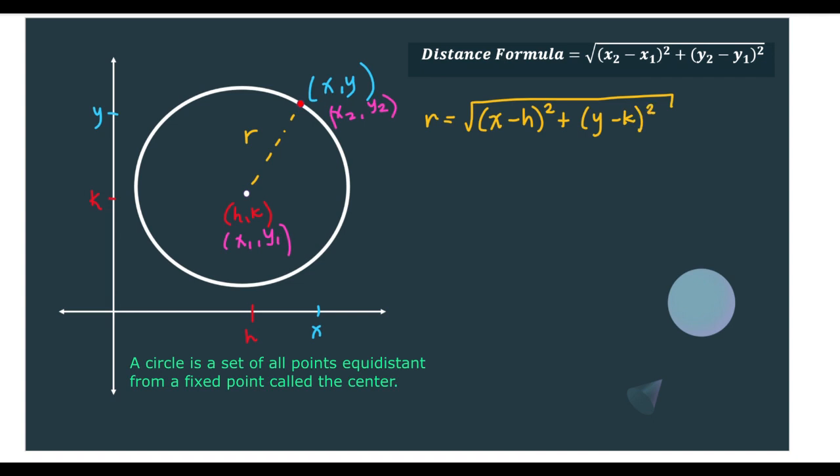So to make our equation simpler, or to remove the square root, we can square both sides. So that would be r squared, and then square this. Therefore, it would give us r squared is equal to the squared quantity of (x minus h) plus the squared quantity of (y minus k). Or we can write this as (x minus h) squared plus (y minus k) squared is equal to r squared.